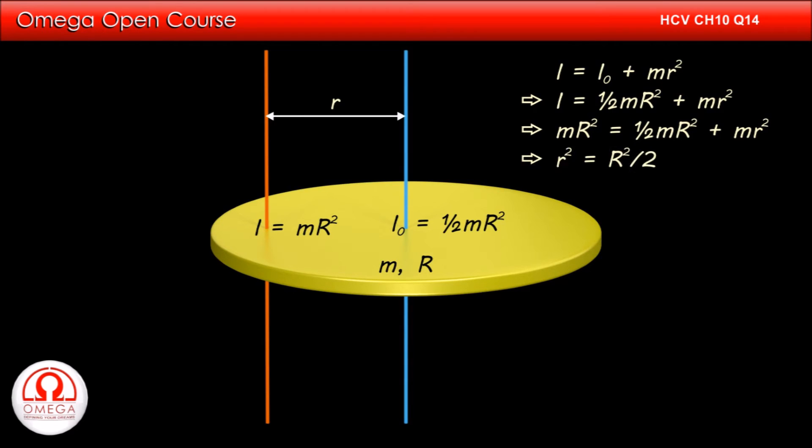Simplifying, we get r square is equal to capital R square by 2, or r is equal to capital R by root 2.